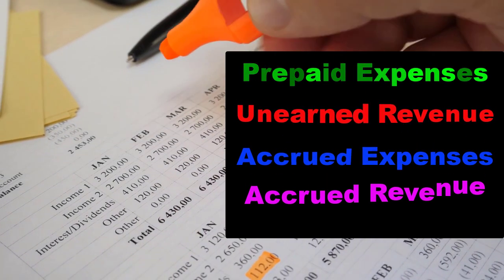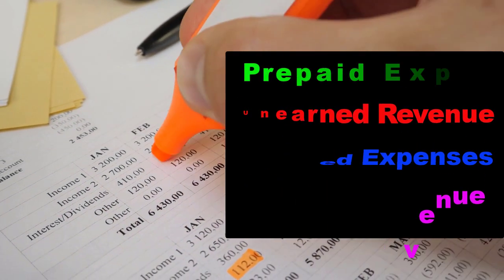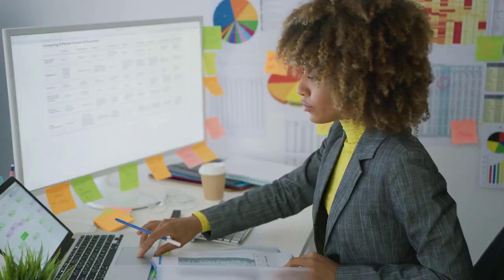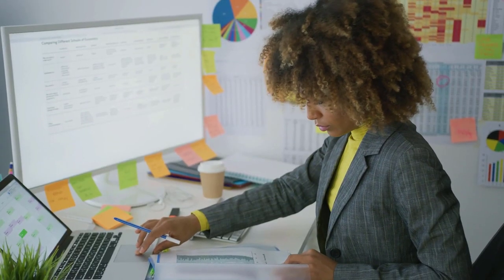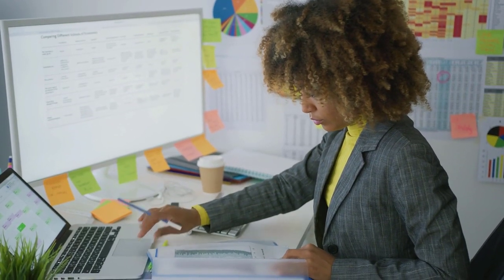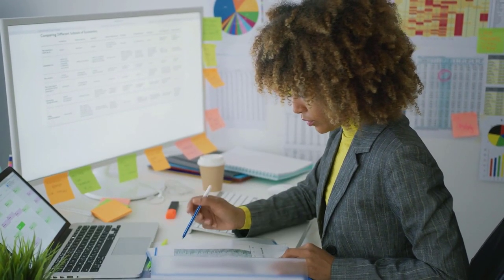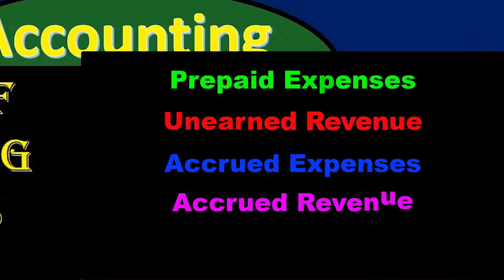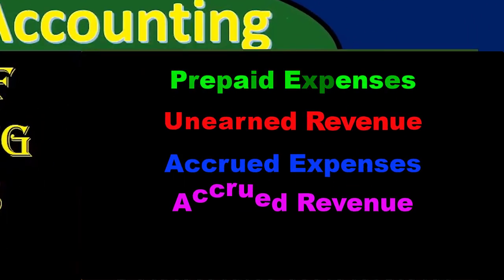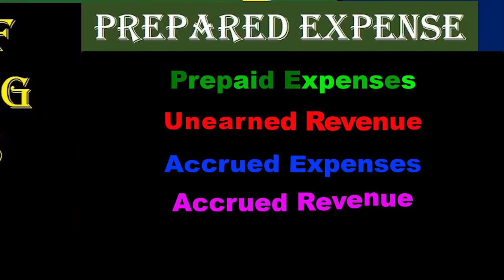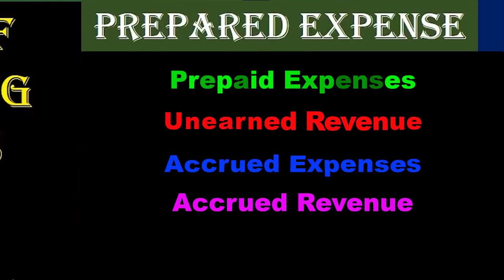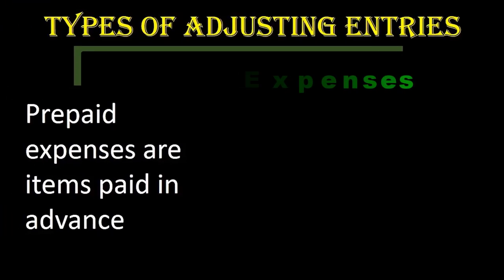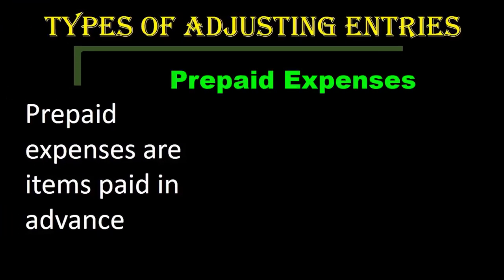Those categories of adjusting journal entries, which will then have more types within each category, will include prepaid expense, unearned revenue, accrued expenses, and accrued revenue. Let's consider each of these.